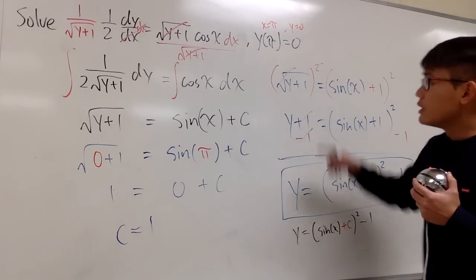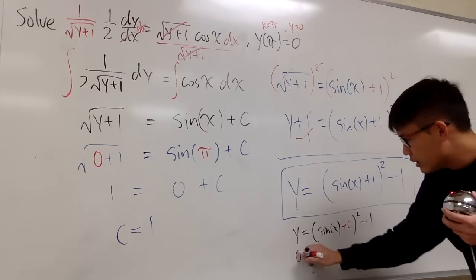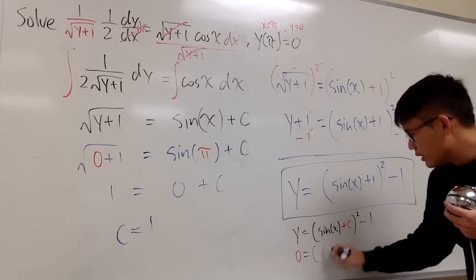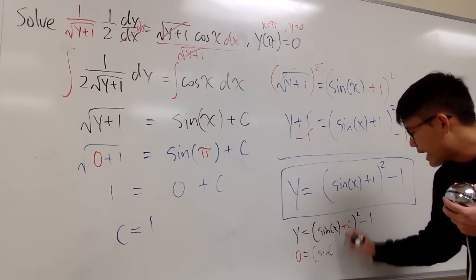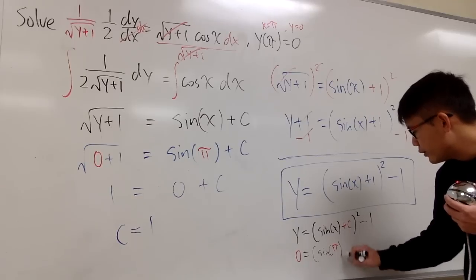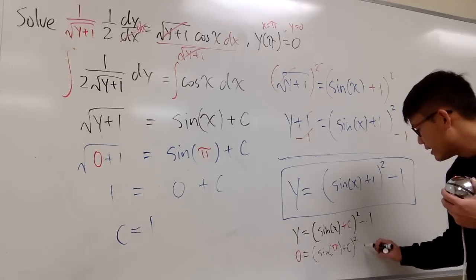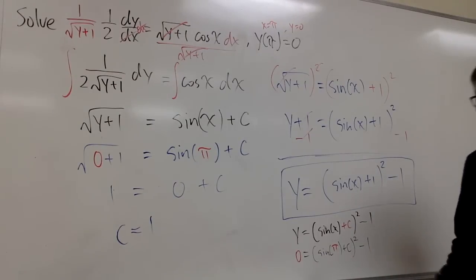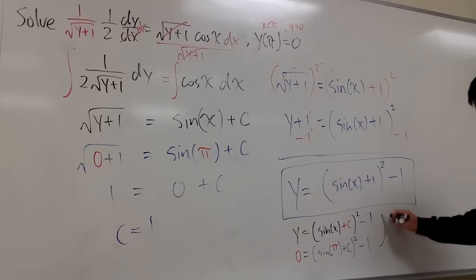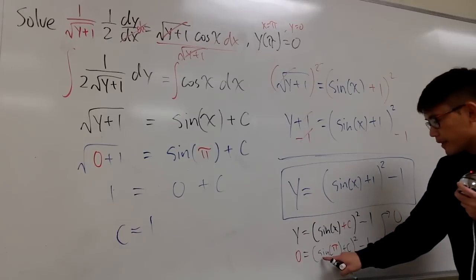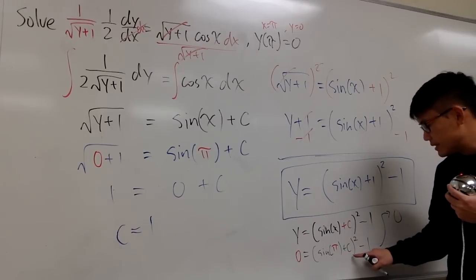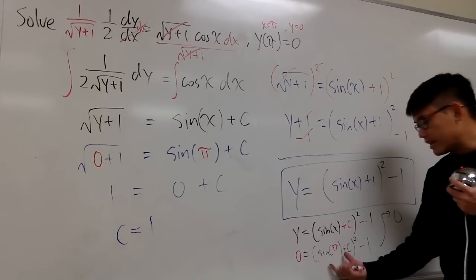Imagine if you get this first, and you plug in these values. x, 0 into y, and this is going to give you, this is sine of pi for the x, and you add a c after that. And you square that, and then minus 1. You see, this is 0, and sine of pi is 0 plus c, so it's just c inside. We have c squared.